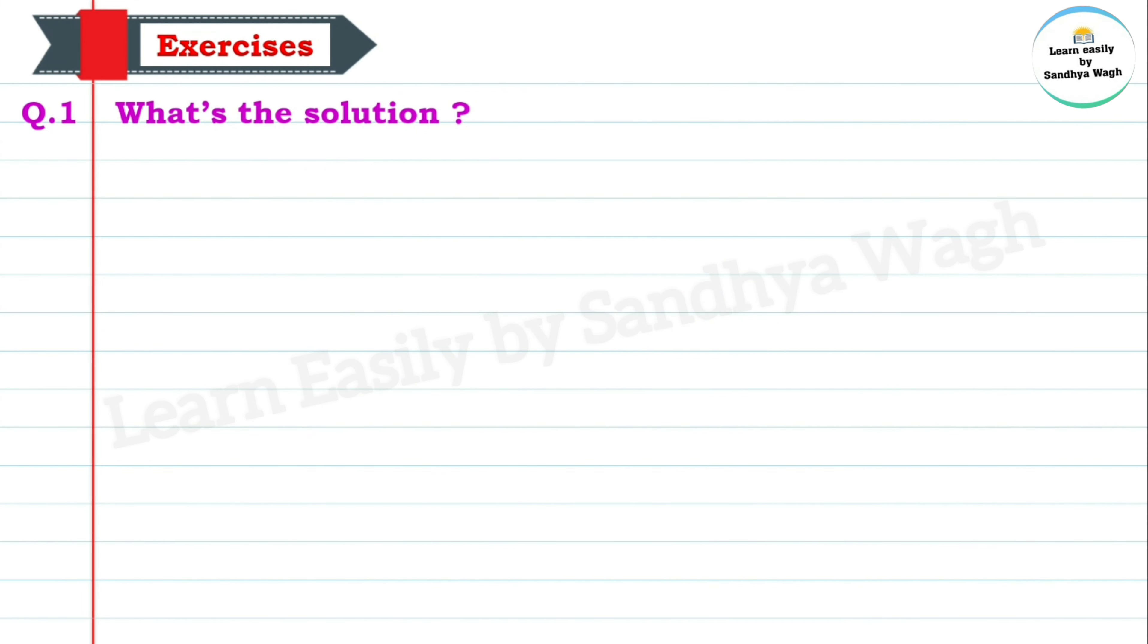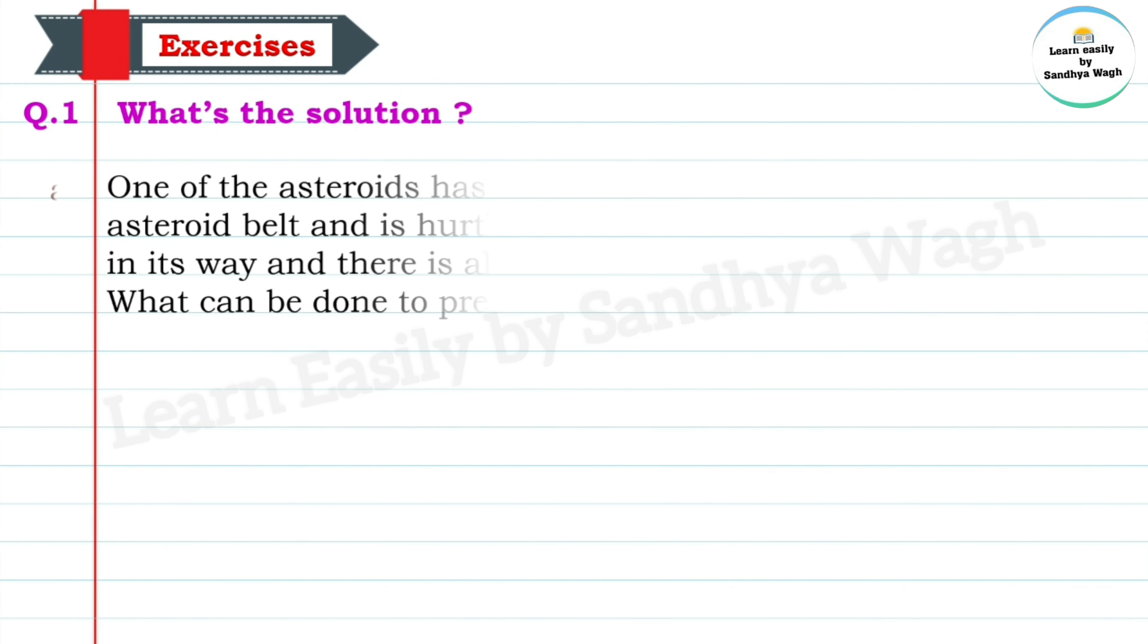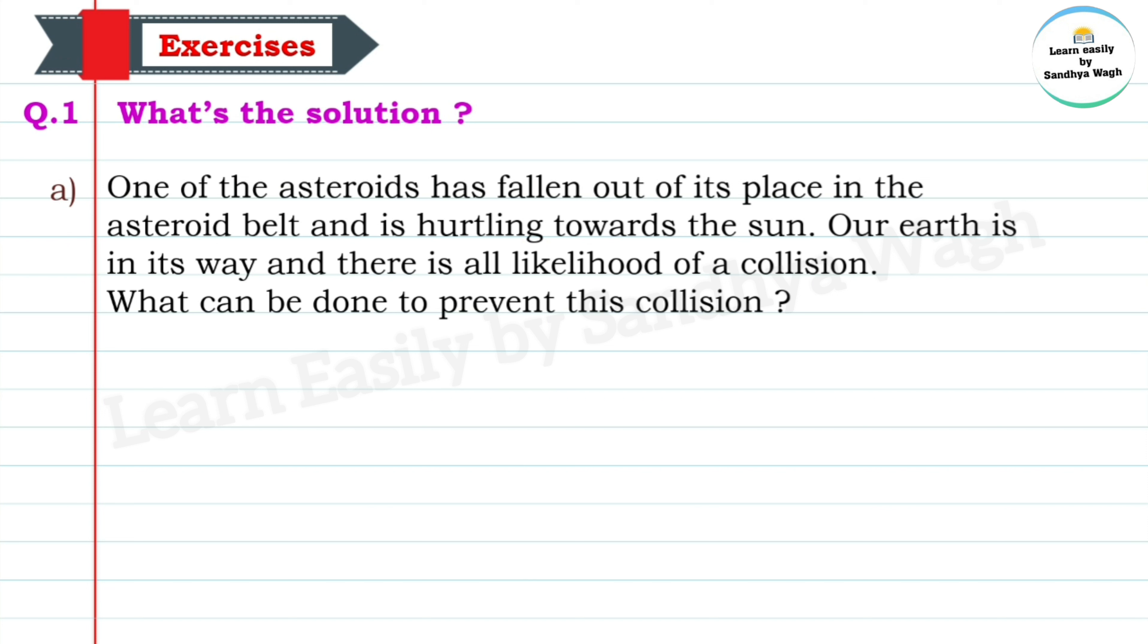Question 1: What's the solution? One of the asteroids has fallen out of its place in the asteroid belt and is hurtling towards the sun. Our earth is in its way and there is all likelihood of collision. What can be done to prevent this collision?